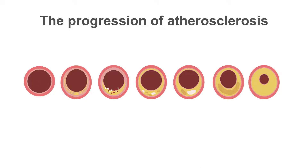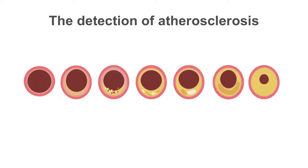This slide shows the classical progression of atherosclerosis. The vessel lumen starts off by being normal, followed by fatty streaks accumulating within the intima wall, and thereafter by white blood cells and red blood cells. Later on, foci of calcification accumulate as calcified plaque. At this stage, there is no significant reduction in the luminal calibre and blood flow to the heart muscle is preserved.